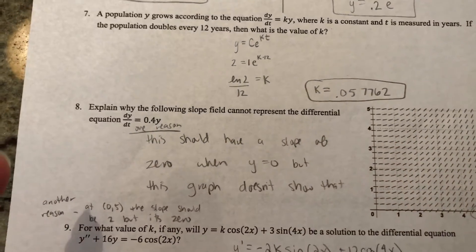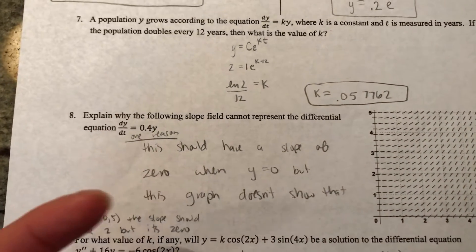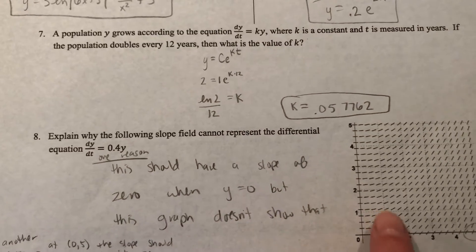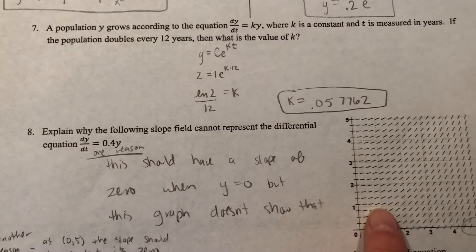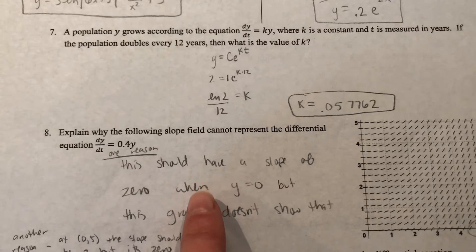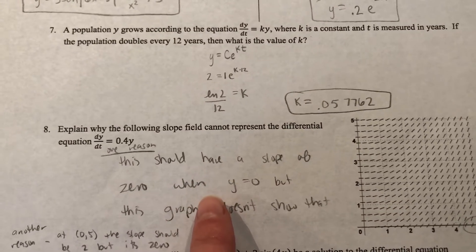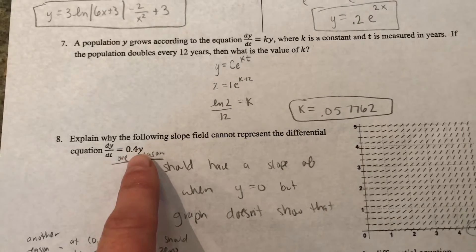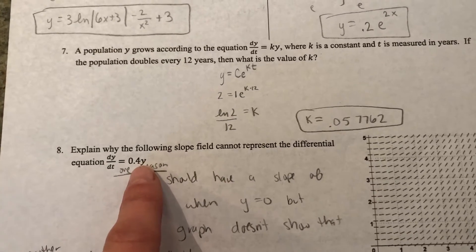What some other kids are doing is they're just picking a point. For example, let's pick the point (1,1). If you put like y equals two into this, the slope should be 2 times 0.4 which is 0.8.